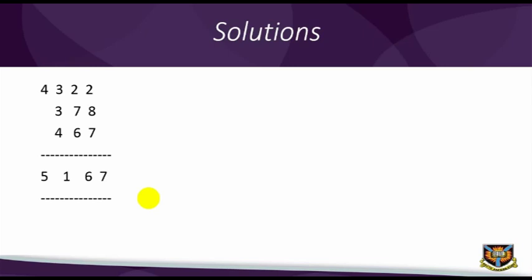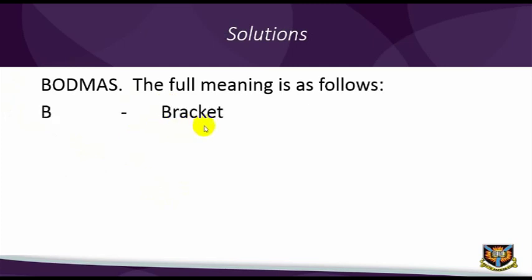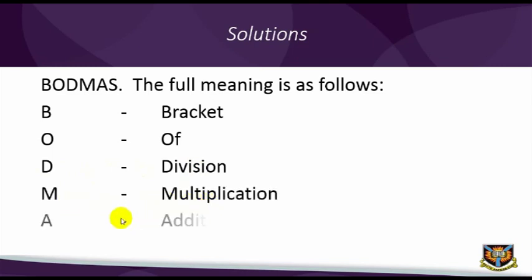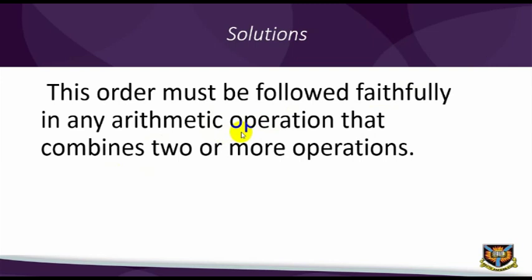Before we solve the next question, let me remind you of a very important operational order in arithmetic. It has the acronym BODMAS. The full meaning is as follows: B equals bracket, O equals of, D division, M multiplication, A addition, S subtraction. That order must be followed faithfully in any arithmetic operation that combines two or more operations.